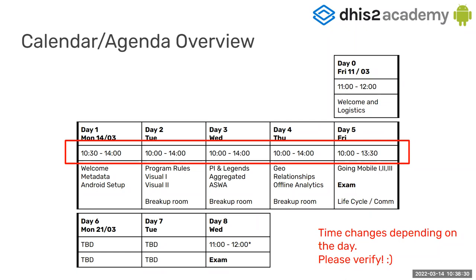We finish around 2 PM — four hours after we start — and the last day is a bit shorter. Today you will see the metadata, and you will have exercises to get your Android app prepared with your metadata, server configuration, and everything with Jaime and Victoria. Tomorrow you will see program rules and how to configure the Android app to look nicer, more intuitive, colorful, and user friendly. On day three, we will see program indicators, how to use legends, how datasets and aggregated data entry work, and you will also learn about the Android settings web app — a web app used on the server to configure the Android application.